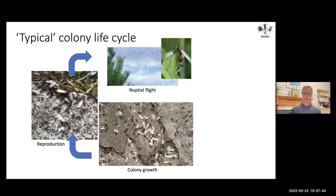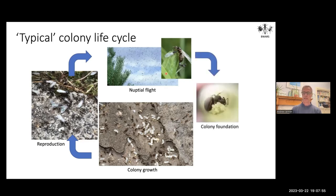Nuptial flights happen at particular times of the year and can be quite noticeable. The males are very short-lived and die soon after mating. The mated females are now prospective queens — they remove their wings and must go through the task of founding a new colony. They shut themselves away, lay eggs, and raise the first generation of workers. Eventually the workers appear and take over running the nest. This is a typical colony life cycle, though many species do things differently.